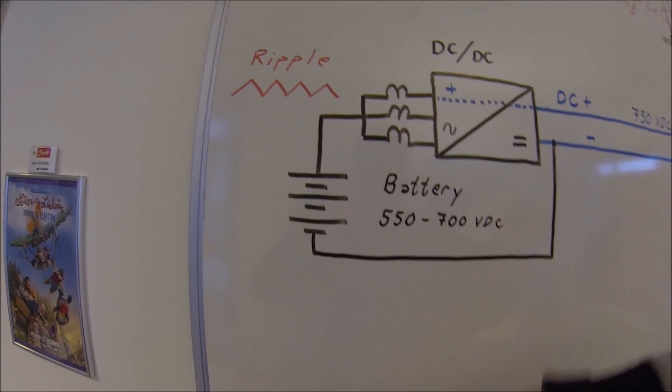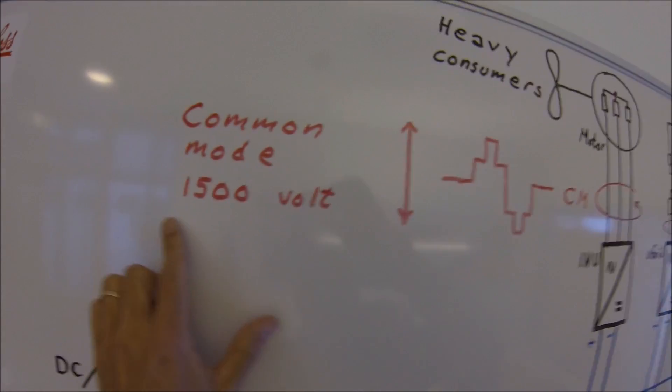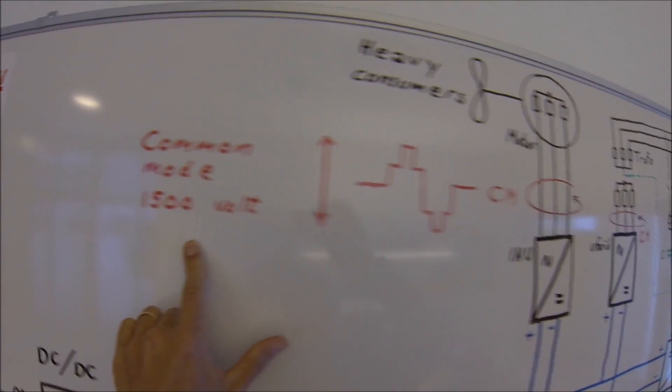The battery will start going up and down with a common mode with a really high voltage, 1500 volts.